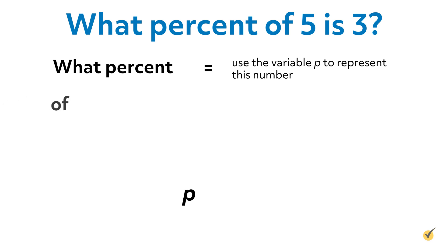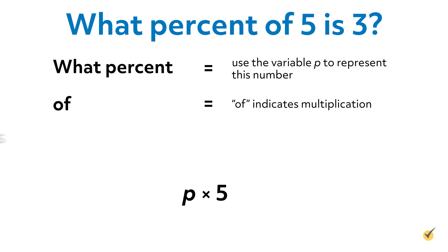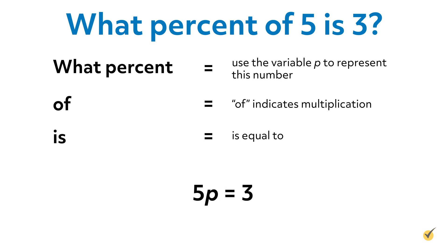The next word is 'of,' which indicates multiplication, so write a multiplication sign after p. The next part is the number 5 — write 5 after the multiplication sign. The next part is the word 'is,' which means is equal to, so write an equal sign after the 5. The next part is the number 3 — write 3 after the equal sign. When multiplying a number by a variable, no multiplication sign is needed, so we write the equation with the coefficient 5 next to the variable p.